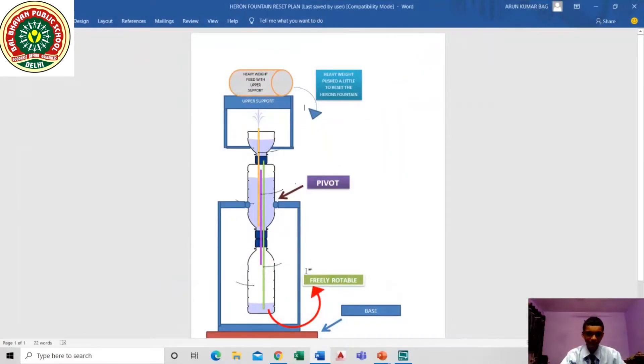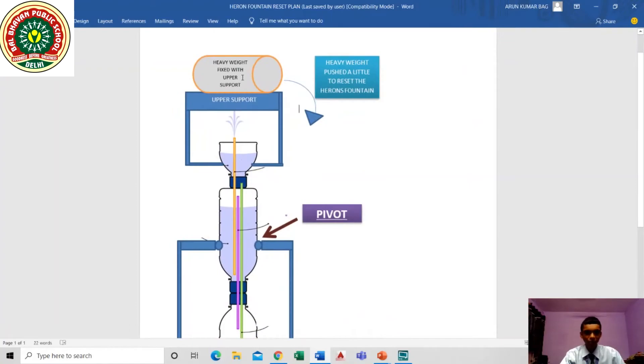Here it is. The thing which I thought to do is that I will fix this Heron's fountain in a particular base and add pivots to it. The pivots will allow free rotation, and I forgot to tell you earlier that if we rotate the Heron's fountain two times upside down, it will get reset on its own. So first thing is that I have put a pivot so it can be freely rotatable, and I have also fixed a heavy weight at the top so that if the heavy weight is pushed only a little bit, it can result in rotating the whole figure.